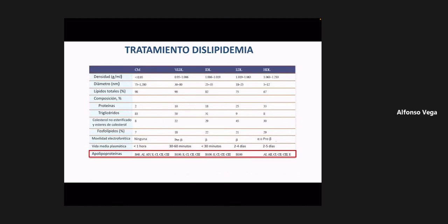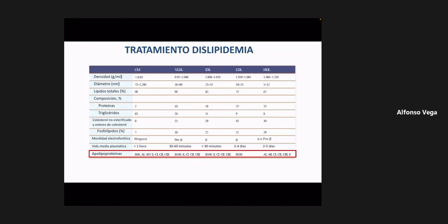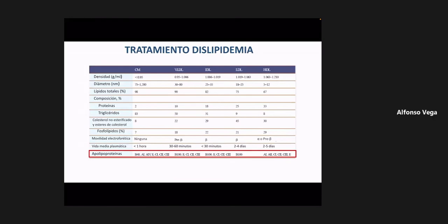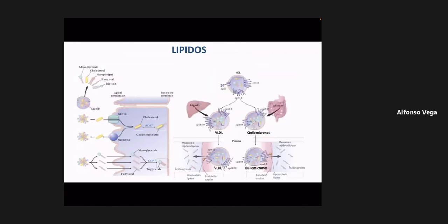Si se utiliza un medicamento que favorece la producción de apolipoproteína A1 o A2, ese medicamento va a incrementar los niveles de lipoproteína de alta densidad. Si se utilizan medicamentos que favorecen la producción de lipoproteína lipasa, van a tener un impacto sobre los triglicéridos, porque la lipoproteína lipasa se adhiere a las moléculas ricas en triglicéridos para degradarlas. Esto explica los mecanismos de acción de los fármacos hipolipemiantes.